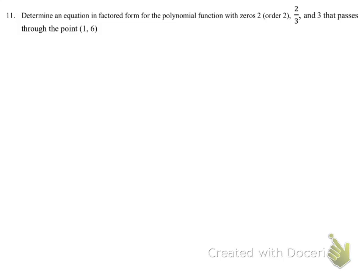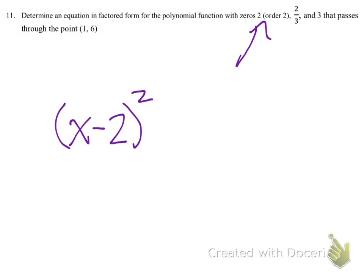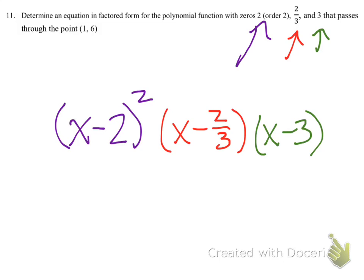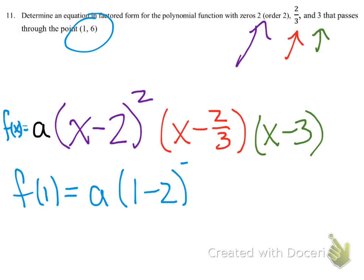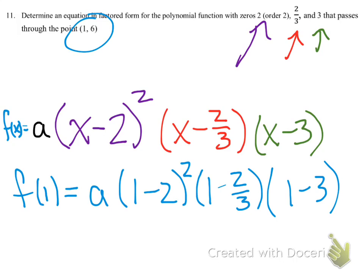Determine the equation in factored form for the polynomial with a zero of order two at x equals two, and additional zeros. The x-intercept at two means x minus two is a factor, and order two makes it squared. There's another x-intercept at two-thirds and one at three. We include an unknown leading coefficient 'a', and we use the point (1, 6) to find it — substituting x equals one and f(1) equals six.